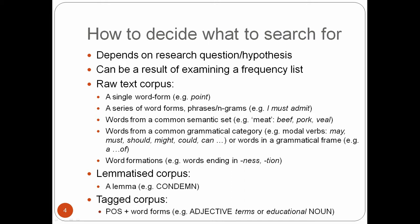And if your corpus is lemmatized, you can also search for a lemma — for example, the verb condemn in all its word forms. If your corpus is tagged, you can search for a part of speech followed by a particular word form, for example, adjective plus terms, or educational plus noun. Or you can even search for the part of speech tag without an accompanying word form — for example, searching for all nouns in a corpus.